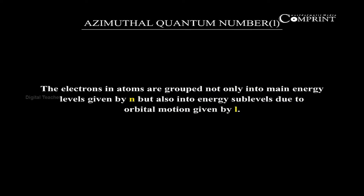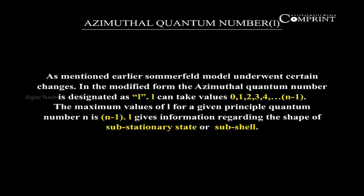The electrons in atoms are grouped not only into main energy levels given by N, but also into energy sub-levels due to orbital motion given by L. As mentioned earlier, the Sommerfeld model underwent certain changes. In the modified form, the azimuthal quantum number is designated as L.